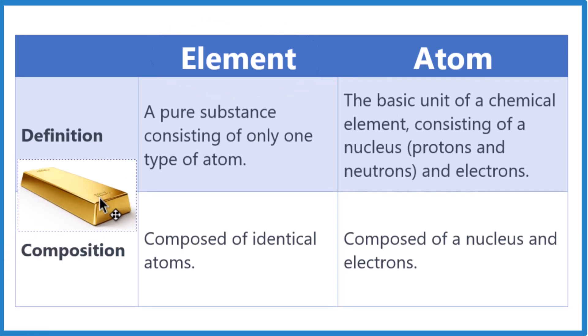And say we had a block of gold like this right here. We would say the element gold is shiny, it's malleable, we can bend it, it's conductive. We wouldn't say an atom of gold is shiny or malleable. It's only one atom.